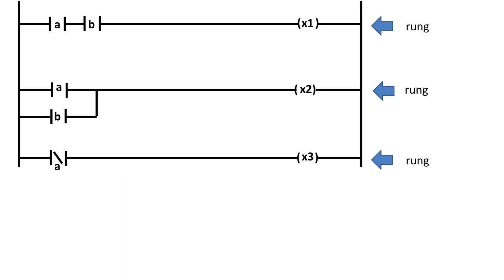So to begin, ladder logic consists of rungs of a ladder that represent the operations or group of operations to be performed by the program. Within these rungs, there are two types of contacts.